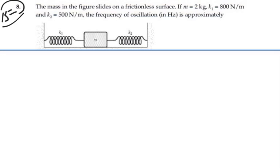Alright, so we have a system. Spring constant of k1 is 800 newtons per meter, k2 is 500 newtons per meter, and we have a mass that's 2 kilograms.